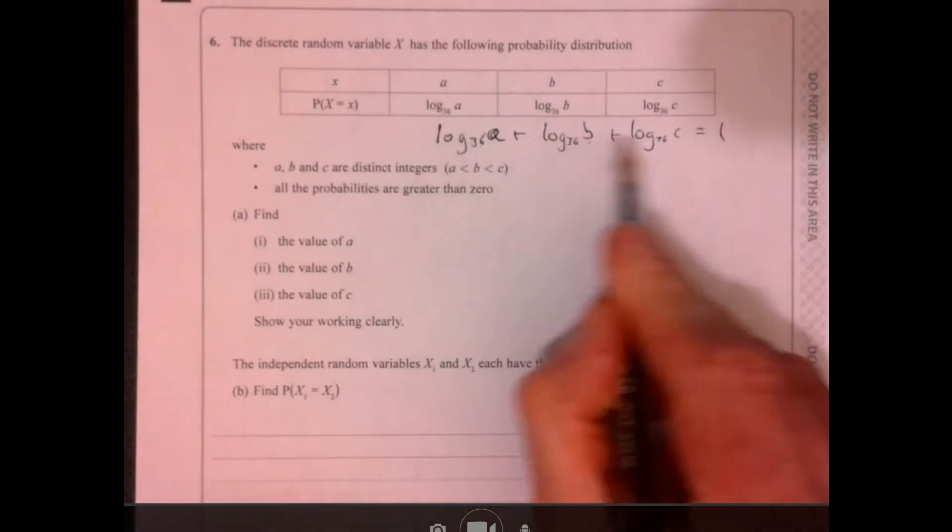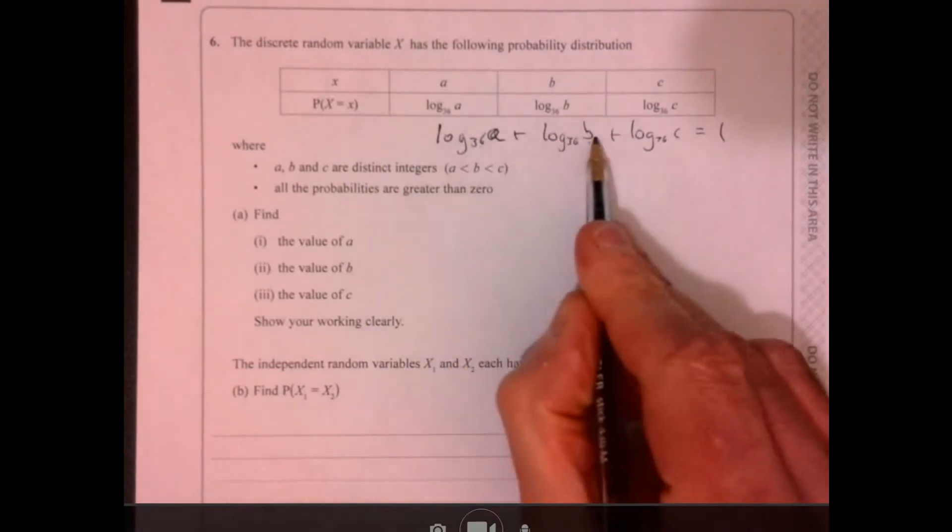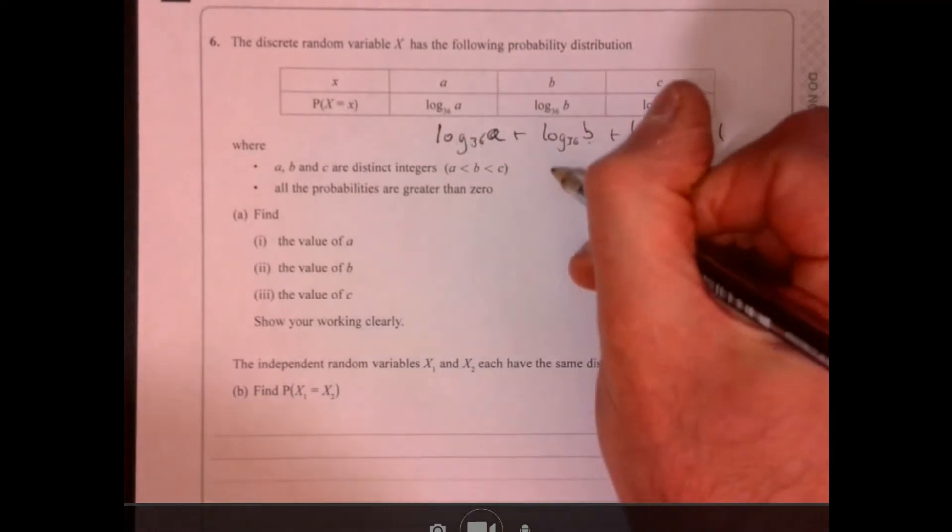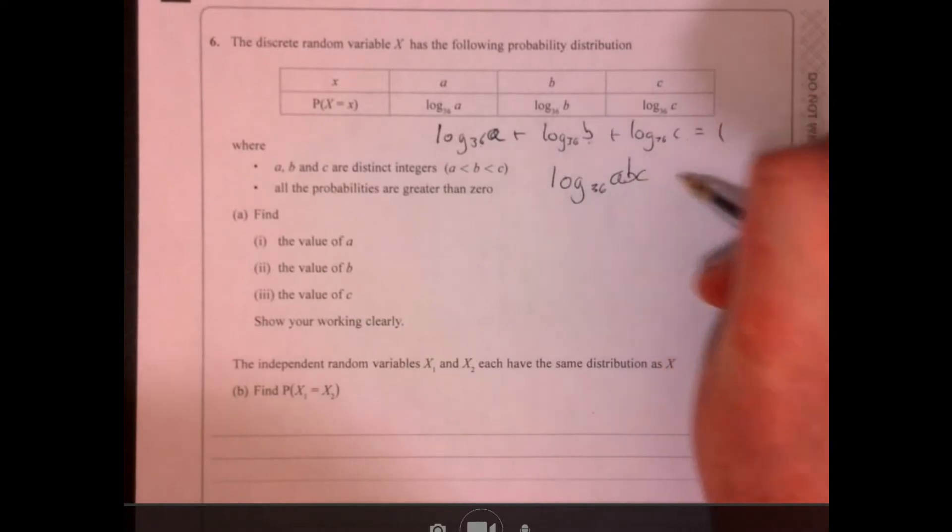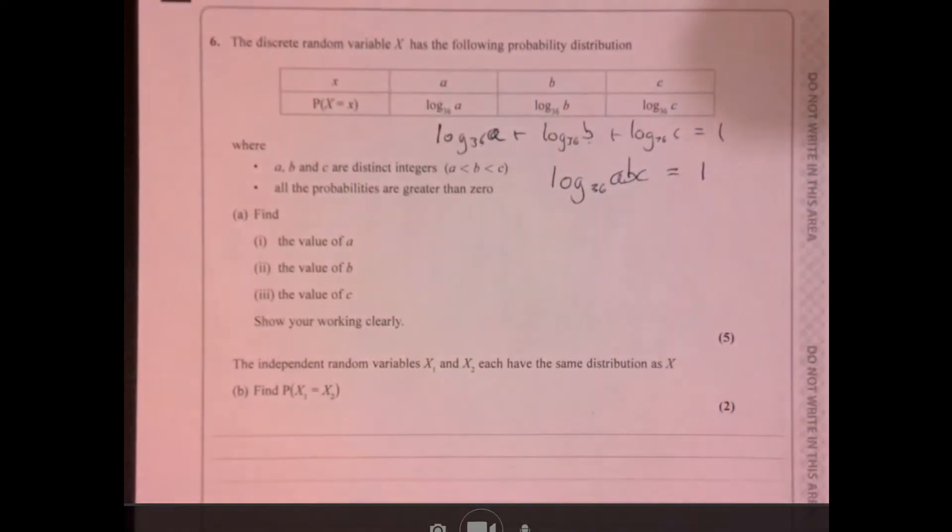and we know that that lot equals 1. Now, using some basic knowledge of logs, when we add these guys together, I know that we can write this down. We just multiply together, don't we?